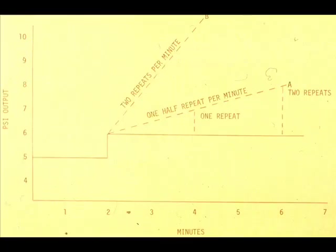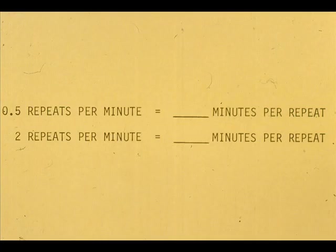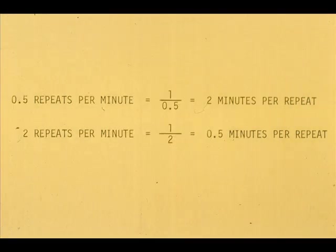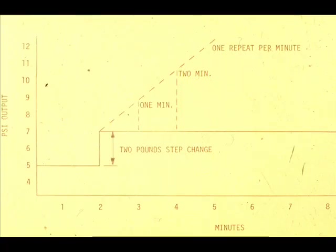Curve A shows a half a repeat per minute; B shows two repeats per minute. Can you convert these to minutes per repeat? Two repeats per minute equals one over two, equals 0.5 minutes per repeat. If the proportional response change is larger, the reset will repeat a larger amount. Here, the two pound change is repeated at the rate of one minute per repeat.